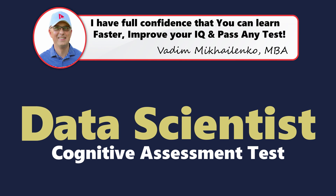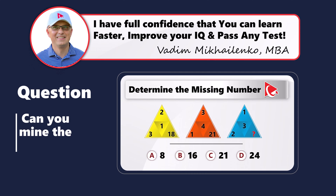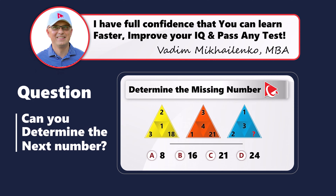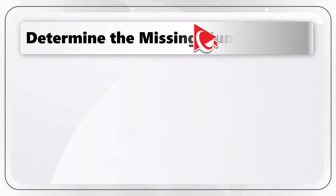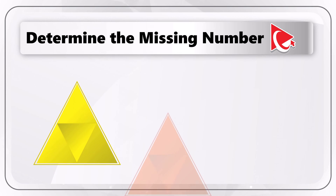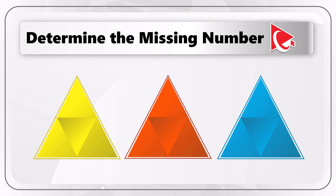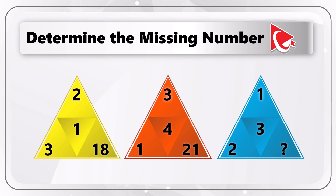What's interesting about this question is that it not only allows you to test your math skills, but also checks your pattern recognition abilities. You're presented with three triangles, and you need to determine the missing number. Each triangle has four digits inside — three digits by the corners and one digit in the middle.